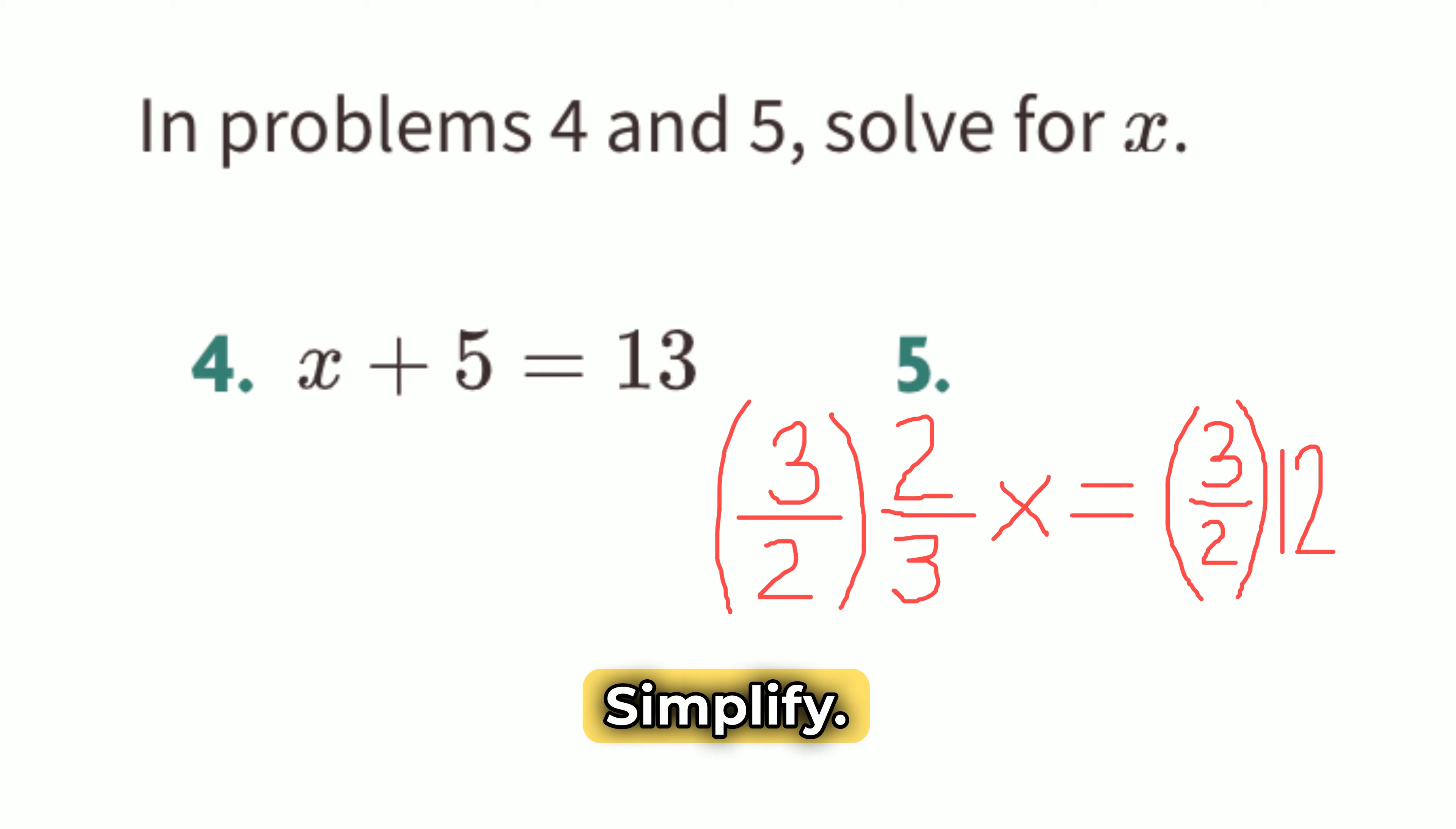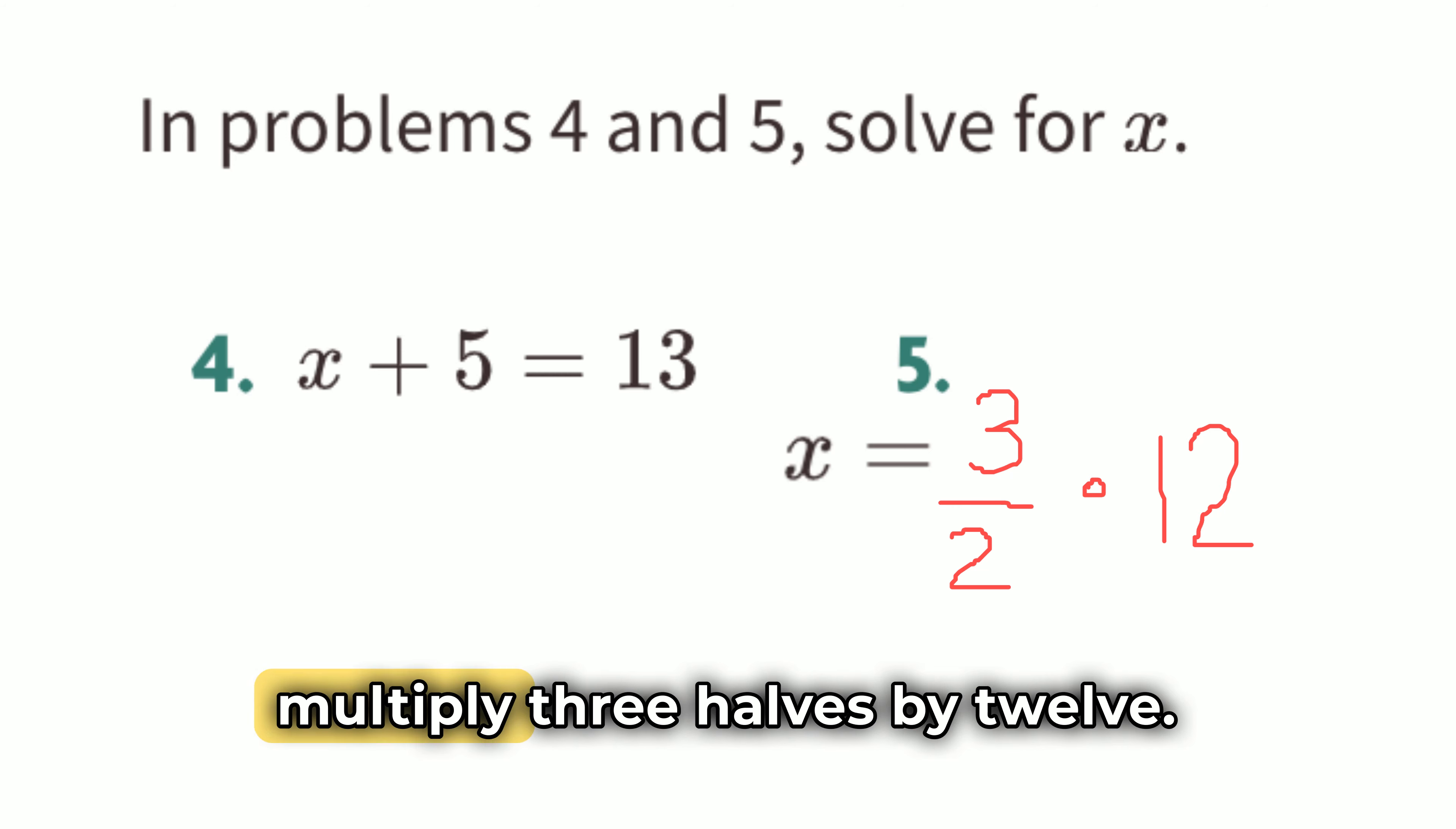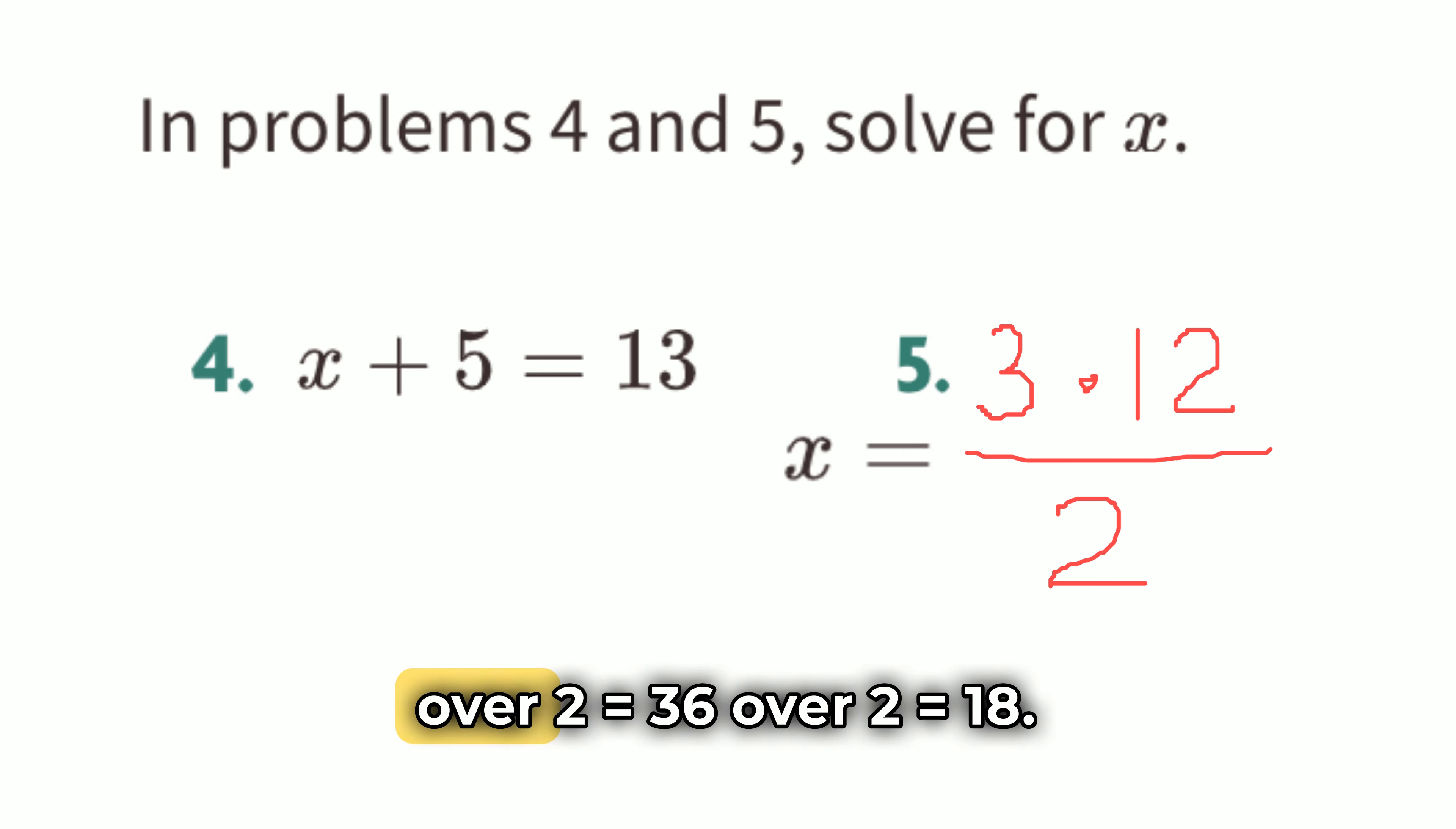Step 3. Simplify. On the left side, 3 halves times 2 thirds cancels out to just 1x or just x, because multiplying a number by its reciprocal always equals 1. x equals 3 halves times 12. Now, on the right side, multiply 3 halves by 12. First, think of 12 as the fraction 12 over 1. x equals 3 times 12 over 2 equals 36 over 2 equals 18.